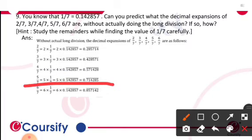And the next is 5/7. 5/7 can be written as 5 times 1/7, that is equal to 5 times 0.142857 bar, that is equal to 0.714285 bar.